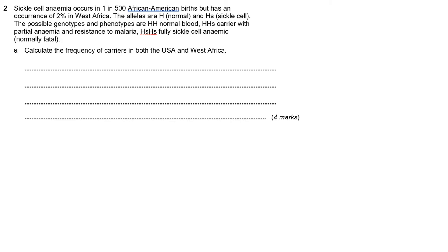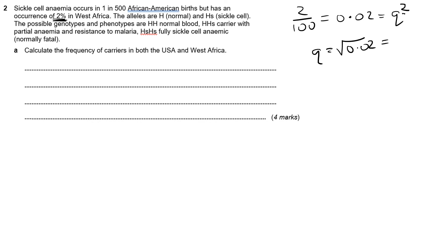We now have to calculate the same thing for the West African population. The thing you need to be careful of is that they have given us Q squared in a very awkward way. What they've given us is 2%, which is 2 over 100, equals 0.02 — and that is Q squared. Don't forget that square, folks. Q is therefore the square root of 0.02, which rounded to three figures gives us 0.141.